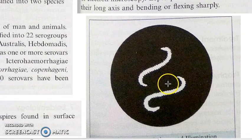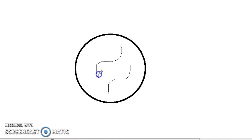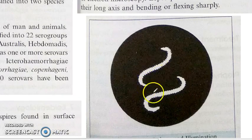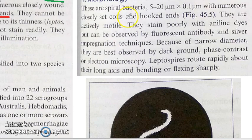Draw the diagram of Leptospira — it's easy. Draw a spiral shape with hooked ends and fill it in with your pencil. Drawing this diagram will earn you good marks in exams. To summarize the morphology: they are motile, spiral-shaped, and have hooked ends.